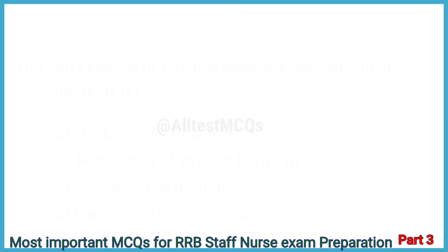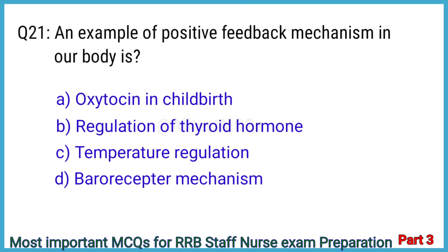Question No. 21. An example of a positive feedback mechanism in our body is? The right answer is Option A: Oxytocin in childbirth.